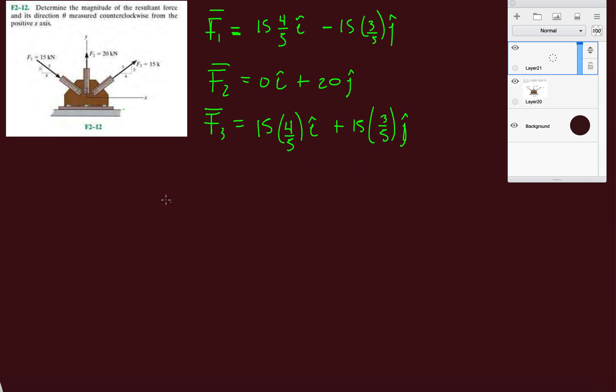Okay, and now, what's my resultant force in the X? Actually, let's do sum force in the X equals FRX. That'll be 15 divided by three, so that's 12 plus zero plus 12, 24 kilonewtons.